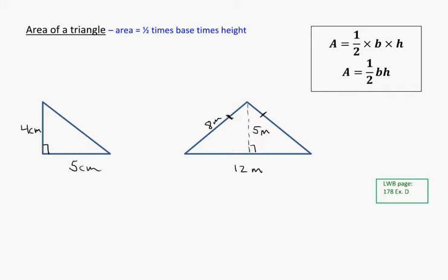Here we're going to look at the area of a triangle, which is similar to the area of a rectangle or a square. But it's one-half times the base times the height. And our formula is shown here as 1/2 bh, or 1/2 × b × h.